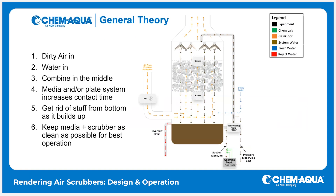A general theory on how they operate: we bring the dirty air in from the cooker or from whatever process, we bring fresh water in, and they combine in the middle. Water is able to capture odors and cool the fats and solids so that they drop out into the bottom sump. We spray it inside the machine right on top of the gas. There's generally media of some sort in the middle to increase surface area and increase contact time of the water and the gas.